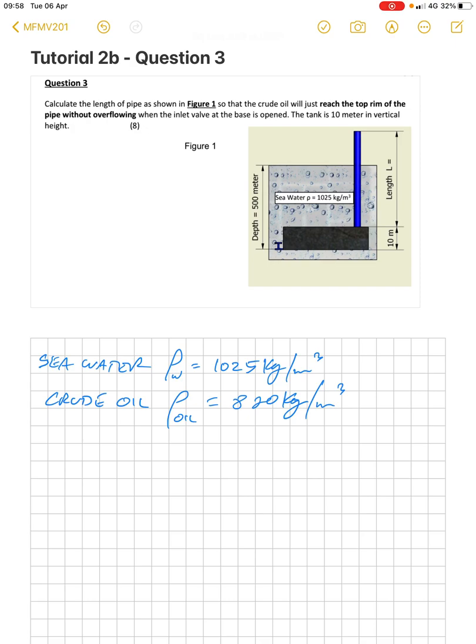We're asked to calculate the length of the pipe as shown in figure 1, so that the crude oil will just reach the top rim of the pipe without overflowing when the inlet valve at the base is opened.